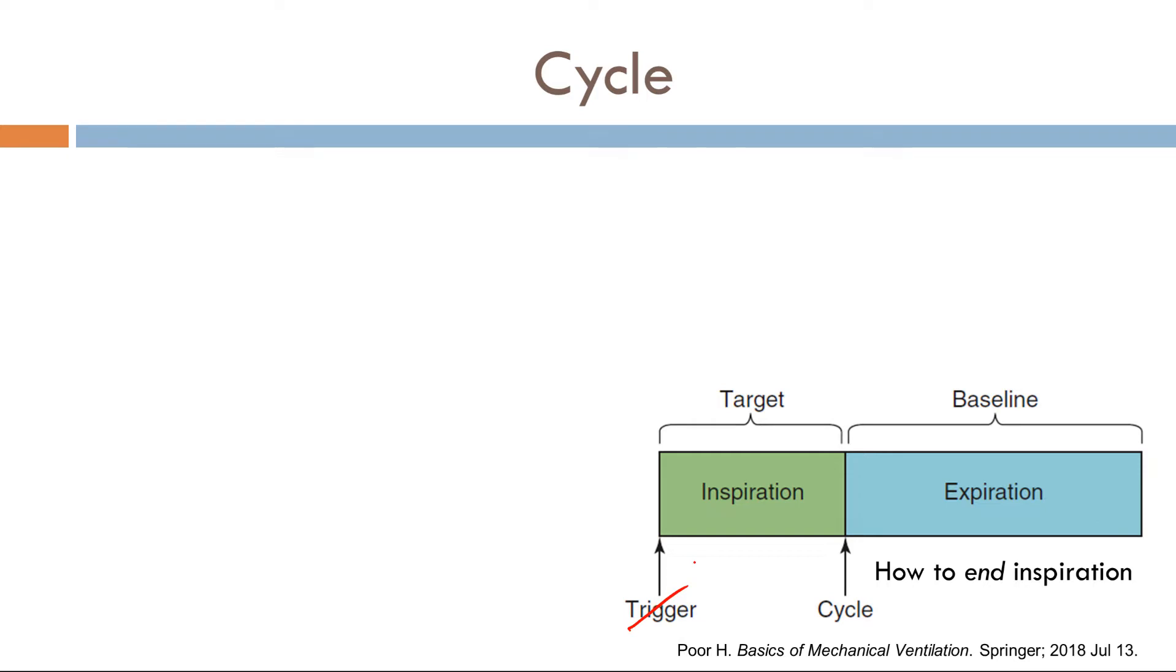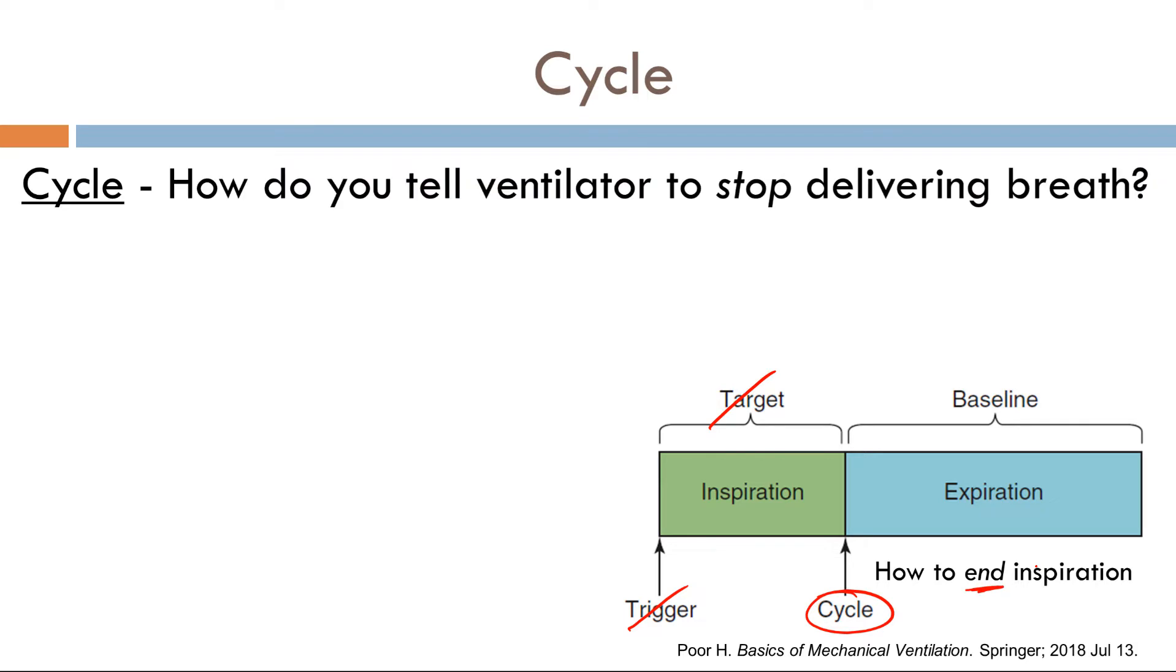So we've talked about the trigger, we've talked about the target, now it's time to talk about cycle. Cycle is how to end inspiration. So how do you tell a ventilator to stop delivering a breath? A breath would continue indefinitely in a ventilator unless a particular variable told it to stop delivering your breath. What's that variable? That's the cycle variable. Now what are your cycle variables? You have volume cycle, time cycle, pressure cycle, and flow cycle.